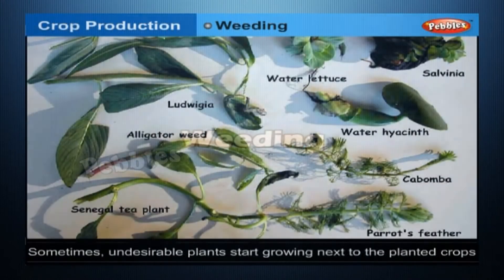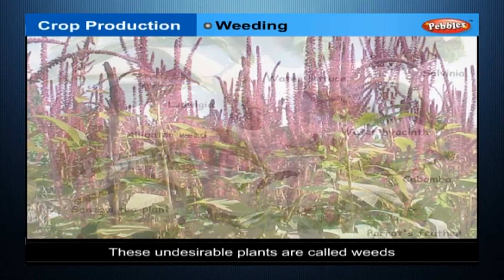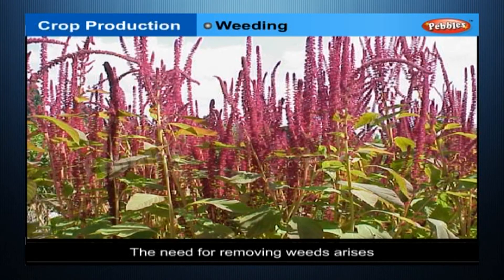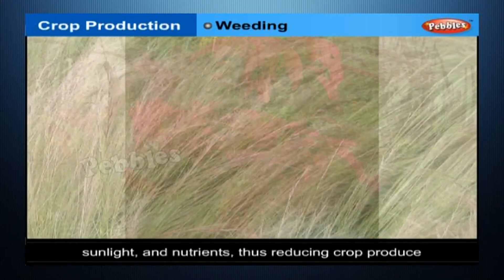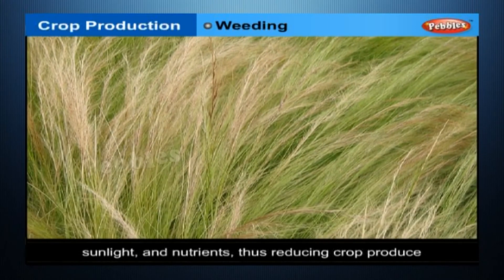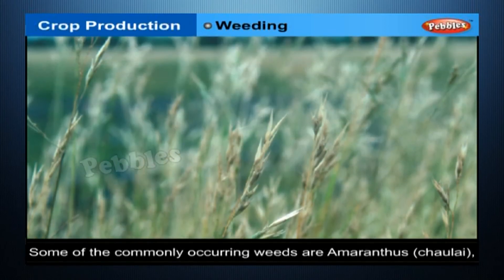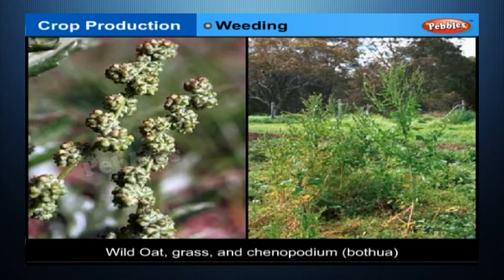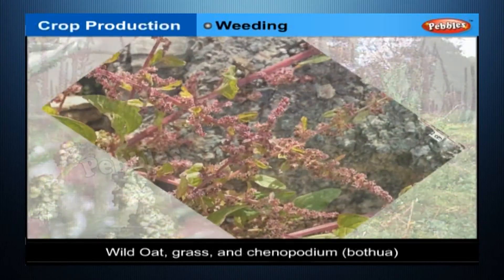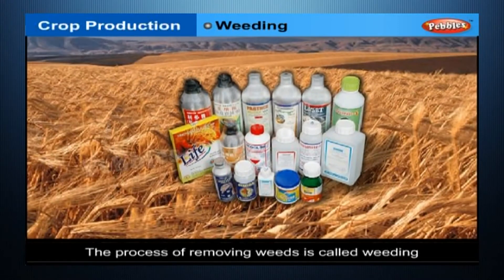Weeding: sometimes undesirable plants start growing next to the planted crops. These undesirable plants are called weeds. The need for removing weeds arises because weeds compete with the crops for water, sunlight and nutrients, thus reducing crop produce. Some of the commonly occurring weeds are amaranthus (chawlai), wild oat, grass and chenopodium (bathua). The process of removing weeds is called weeding.